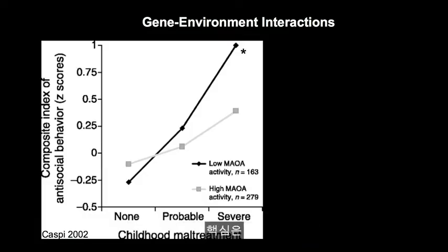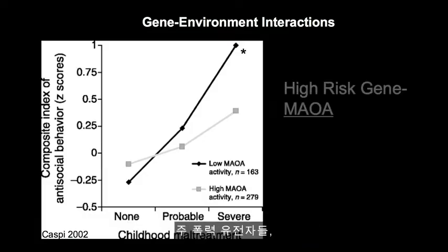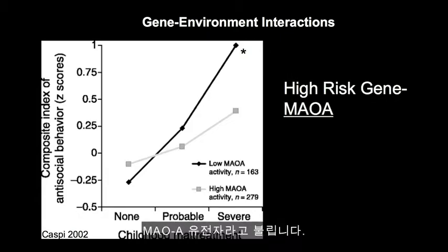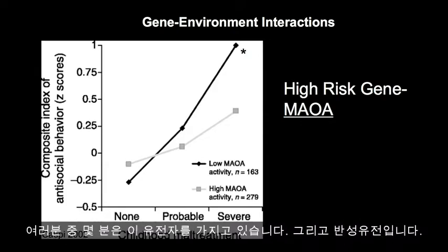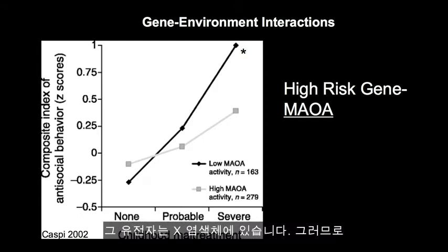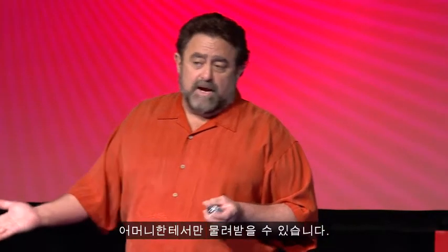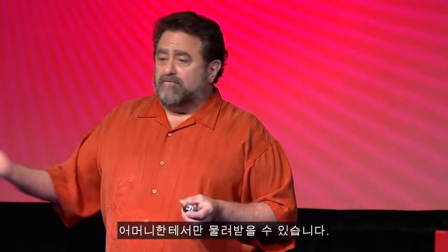The key thing is that the major violence gene is called the MAOA gene, and there's a variant of this gene in the normal population — some of you have this. It's sex-linked; it's on the X chromosome, so you can only get it from your mother.